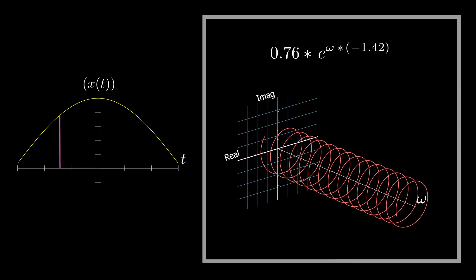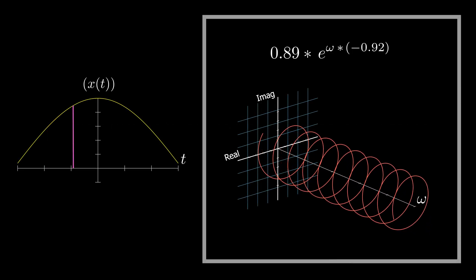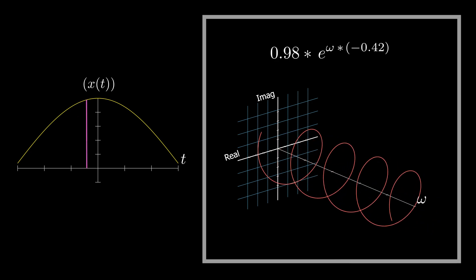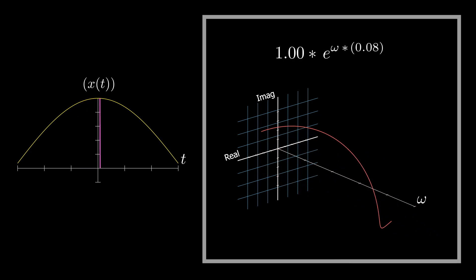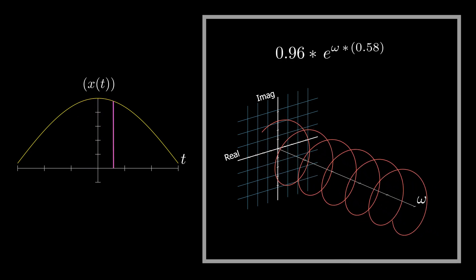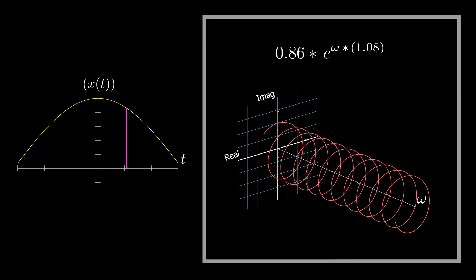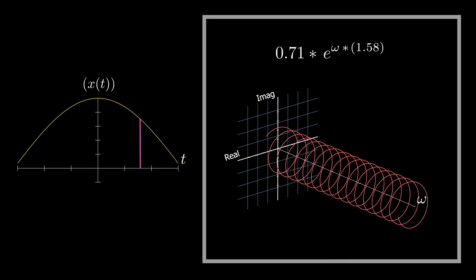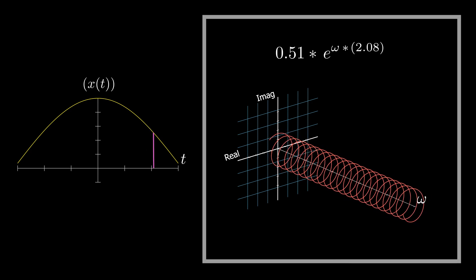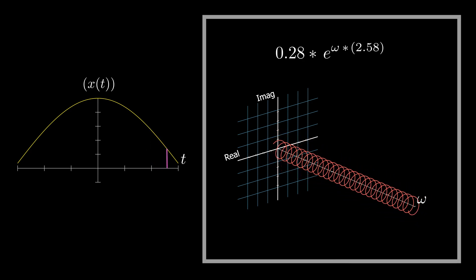In a previous video, we saw that each point in the time domain represents a complex exponential in the frequency domain, whose magnitude is equal to the value of the function at that point, and the rotational speed depends on that instant of time.